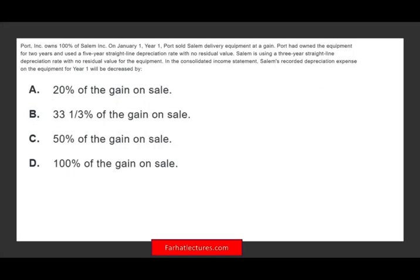Let's go ahead and take a look at this question so we can dive into what we need to learn about today. So we have Port Inc., which is the parent company, owns 100% of Salem Inc., which is the subsidiary. On January 1st, the parent company sold Salem a delivery truck at a gain. What does that mean? It means they had an asset with the book value of $50, and they sold it.